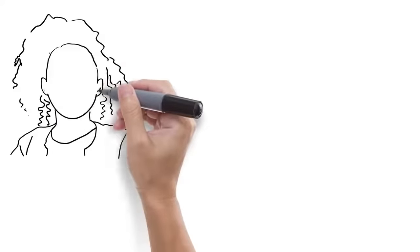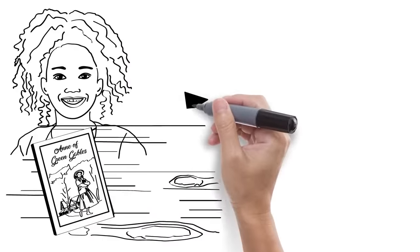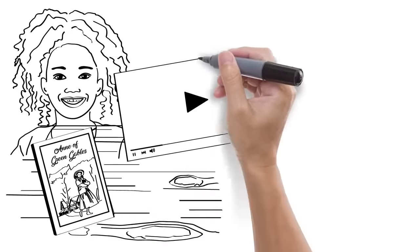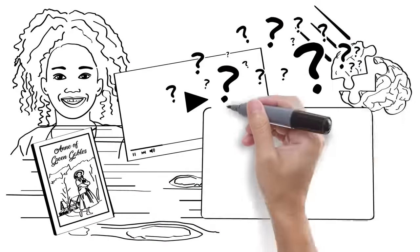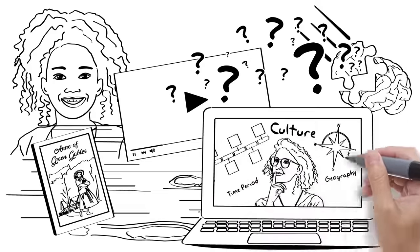In English, Maya is excited to participate in a discussion of Anne of Green Gables. Yesterday, she read a chapter and watched a video with questions to help organize her thoughts. Maya's teacher helps the class explore the story's setting, including the time period, culture, and geography.